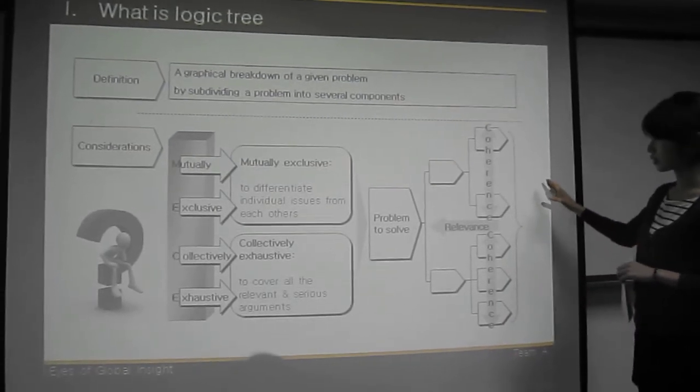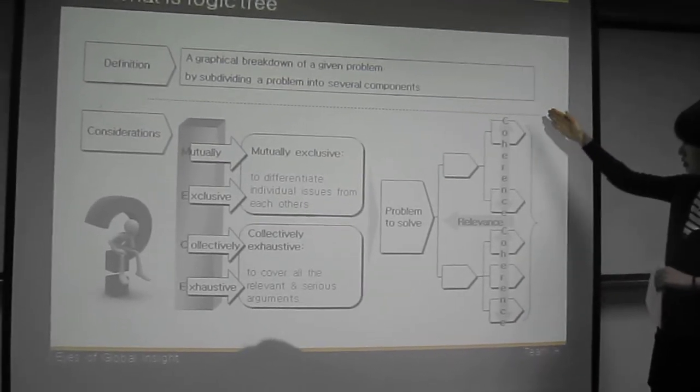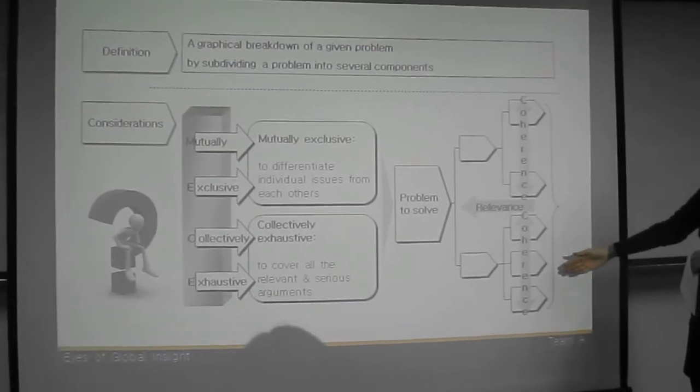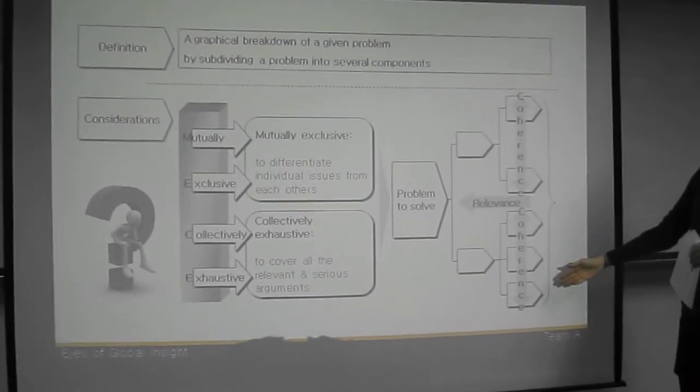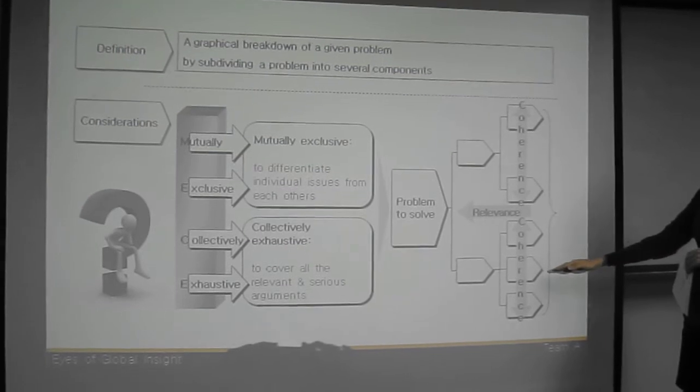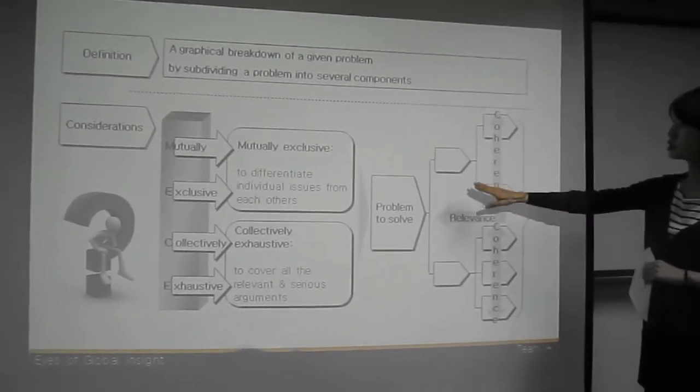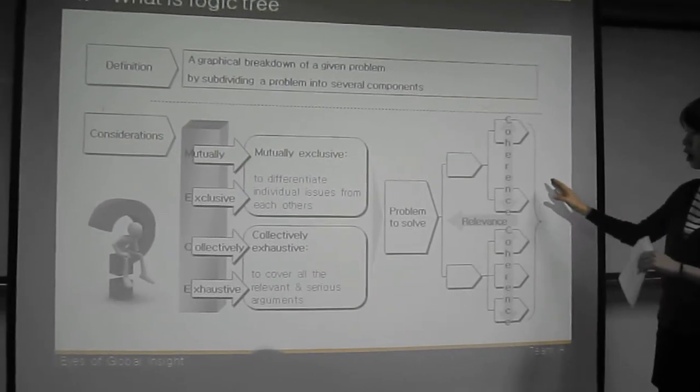Let's look into this Logic Tree. Among these components, it needs to be collectively exhaustive. That means you need to cover all the possible solutions. And also, between the levels, it has to be always relevant.